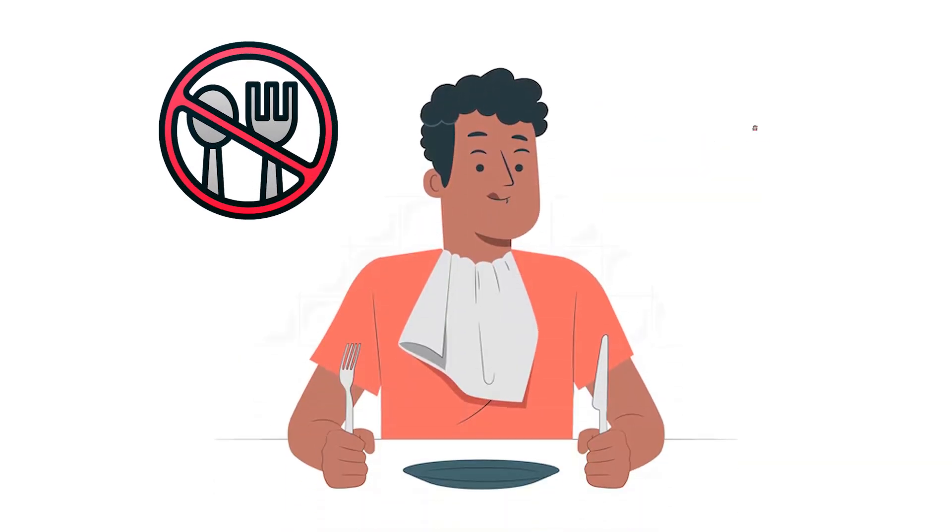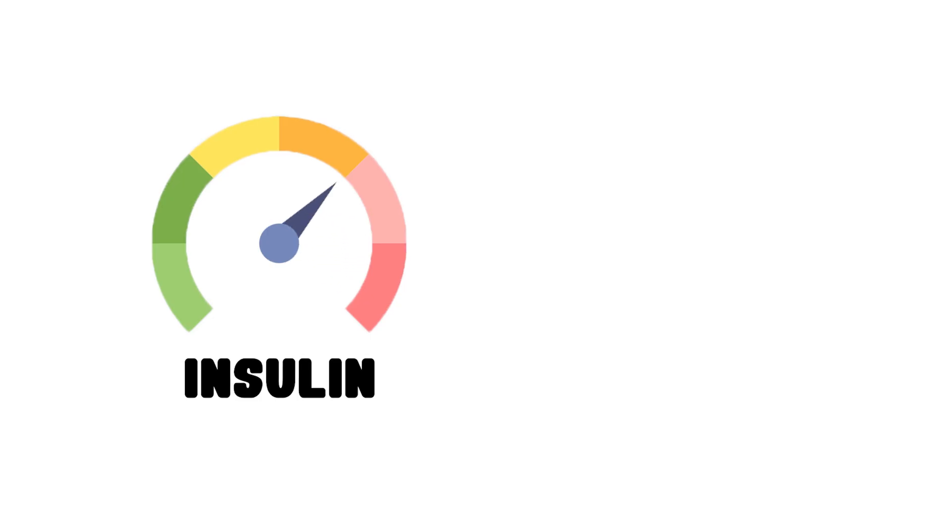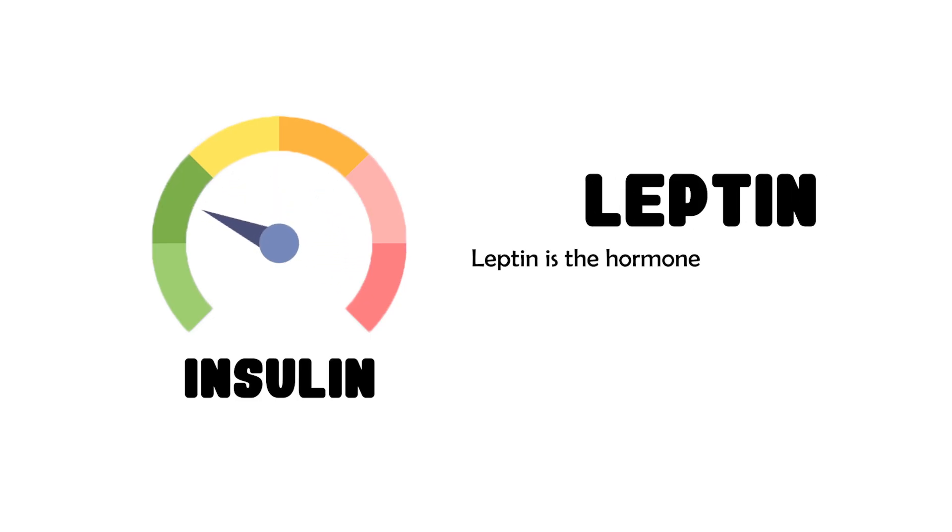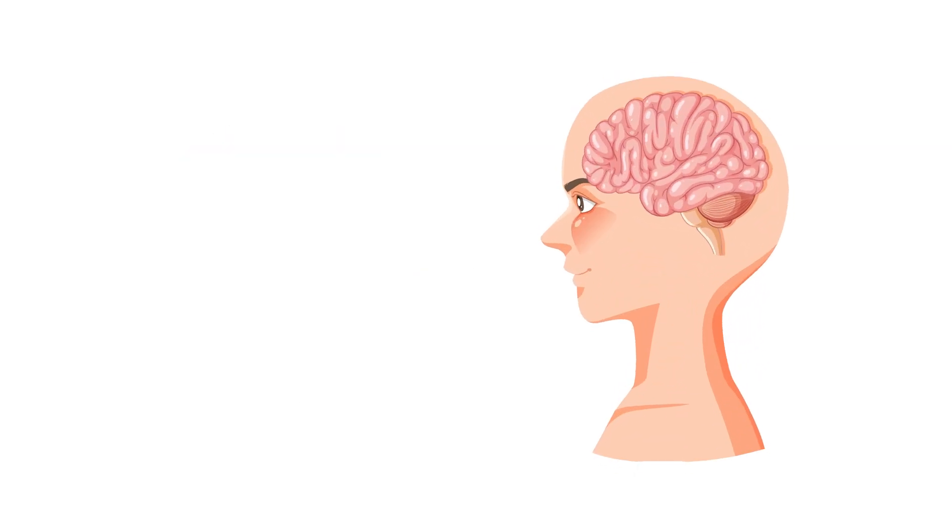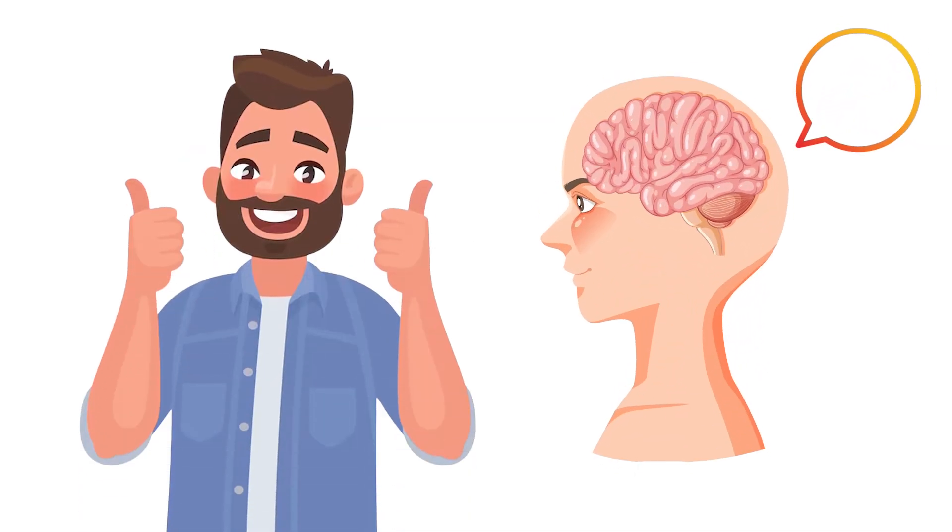When you continue the fast despite feeling hungry, low insulin levels trigger leptin. Leptin is the hormone that helps your brain realize you have stored energy to spare. And once your brain gets that message, your hunger subsides.